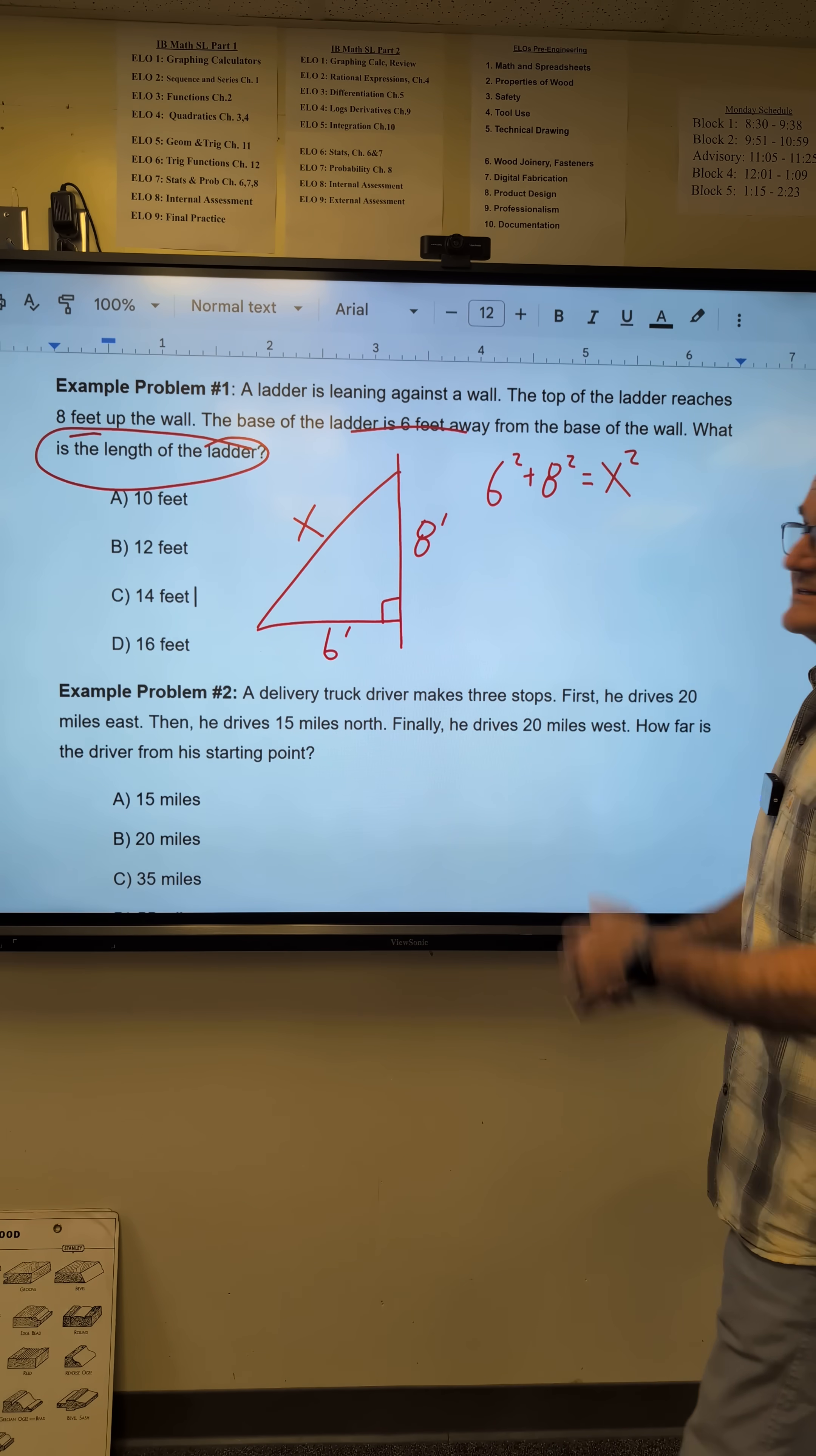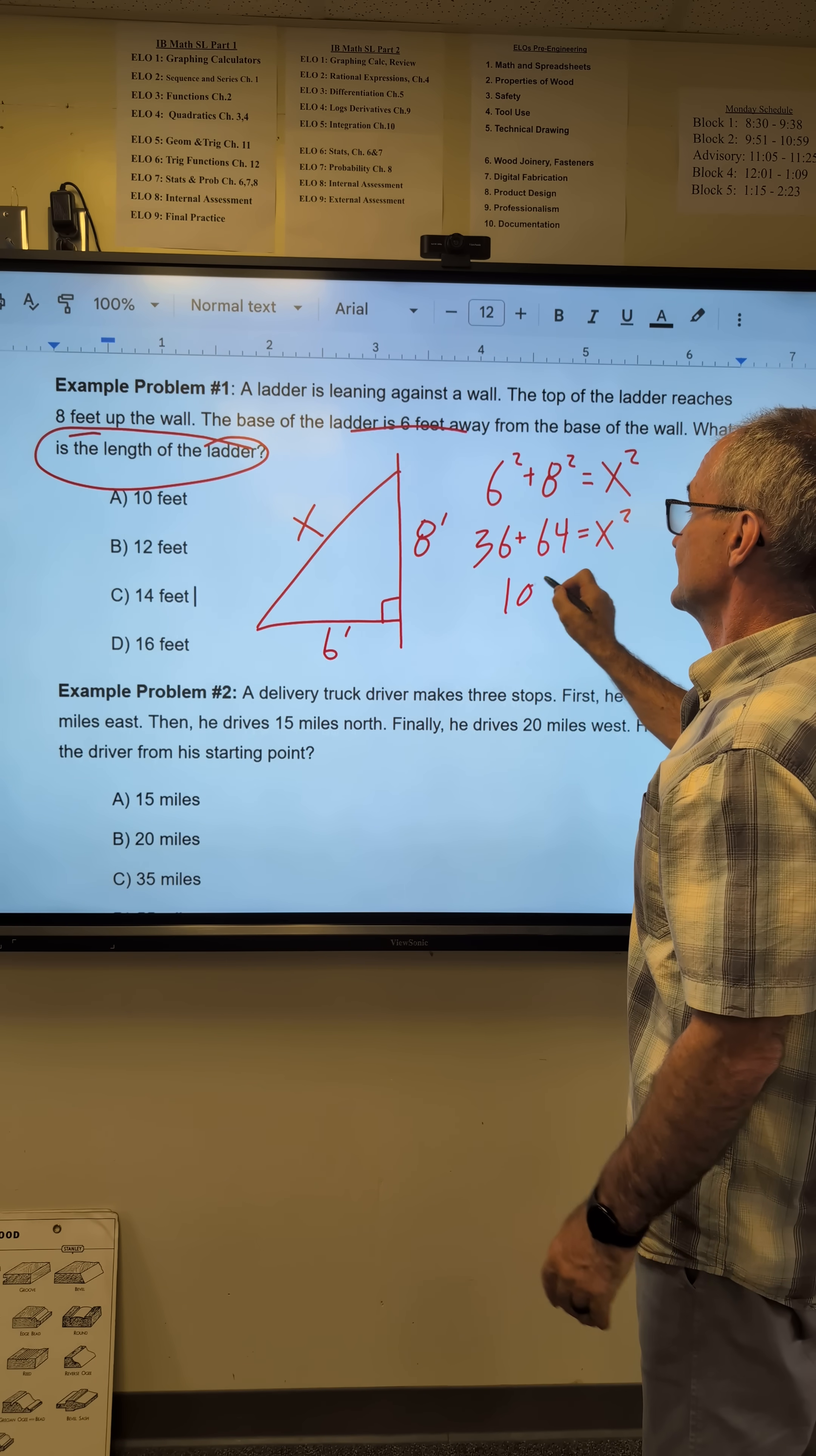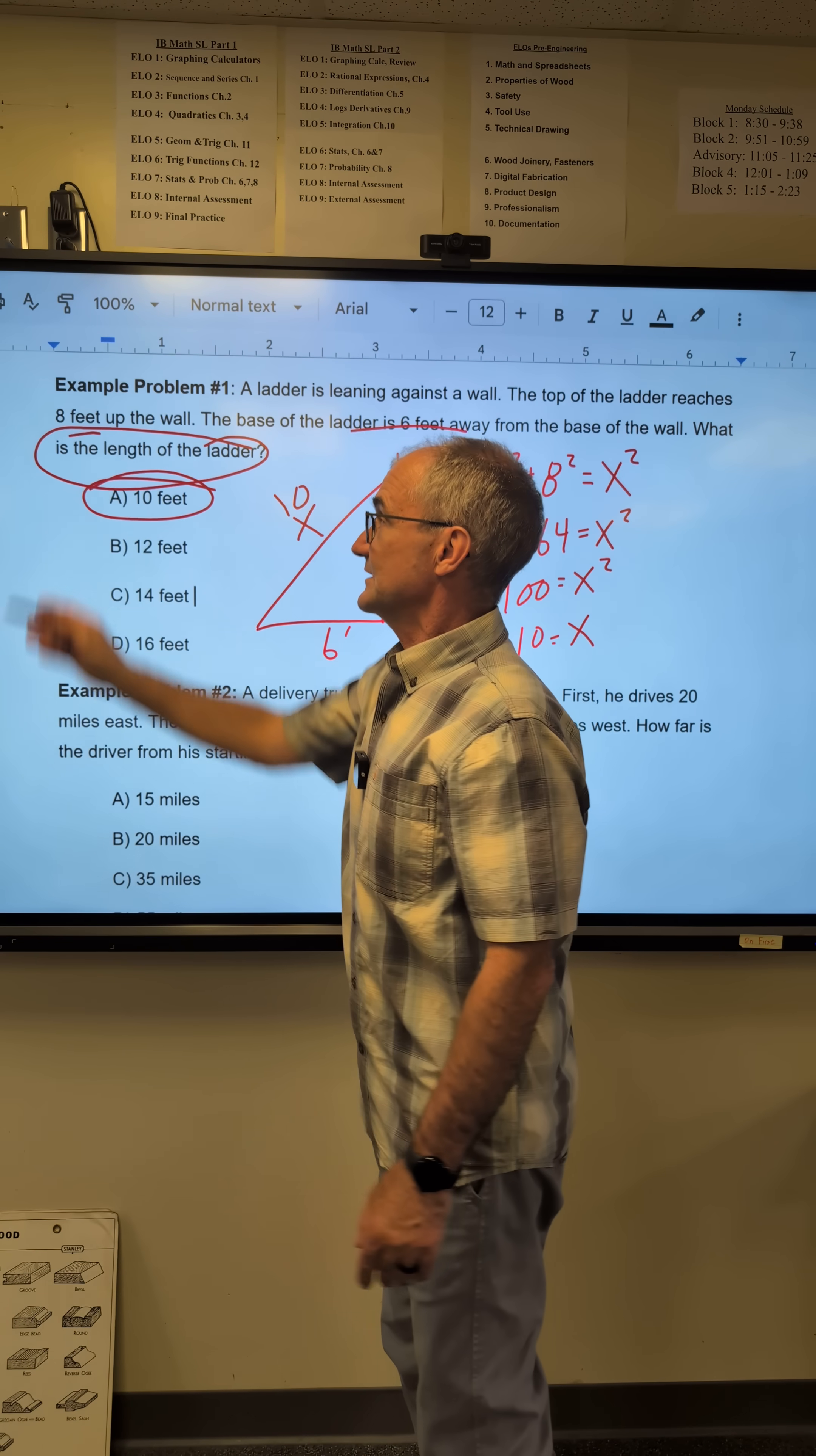Step four, solve the equation. Six times six plus eight times eight equals x squared. Combine those terms. One hundred equals x squared. Square root of both sides. X is equal to 10. My ladder is 10 feet long.